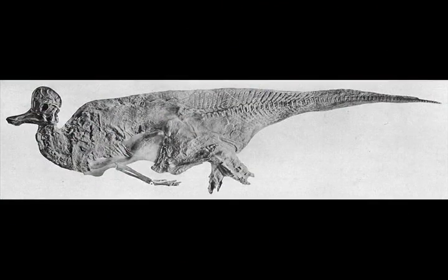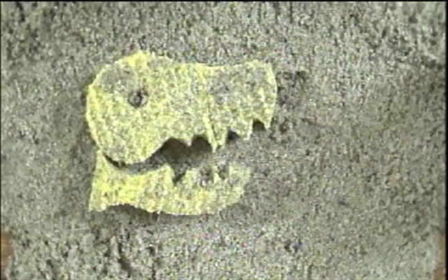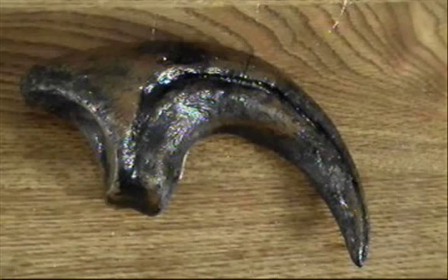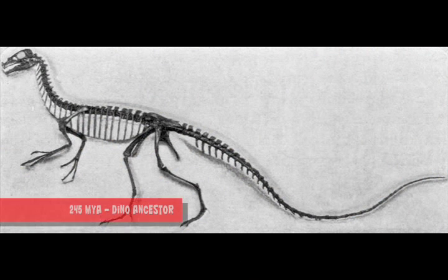Fossil bones form when an animal like a dinosaur dies and sediment from a river bed or volcanic ash covers the animal. While these bones sit buried under water-saturated sediments, the tiny holes in the bones fill with water-soaked minerals from the sediment — just like how the sponge fills up with crystallized salt. This process, known as permineralization, takes thousands of years, turning bone into a rock replica of the original bone.